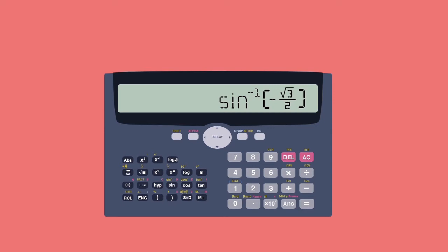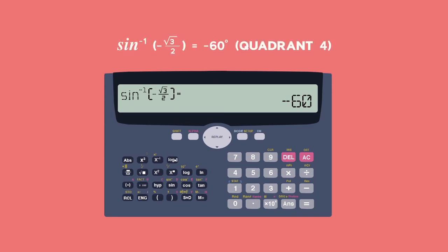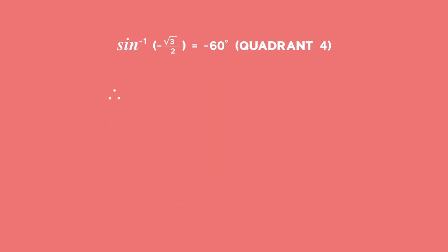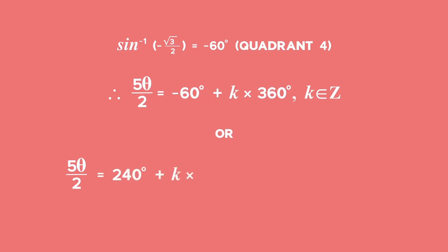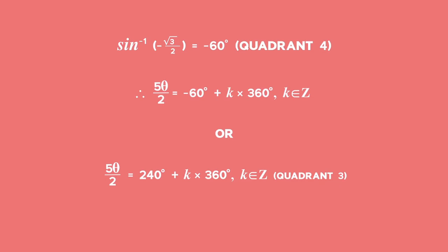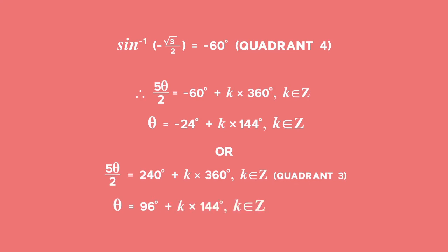When you press second function sine of negative square root 3 over 2 on your calculator, you get an angle of negative 60 degrees. The sine function is negative in the third and fourth quadrants. Therefore, using the general solution, we get: 5 theta over 2 equals negative 60 degrees plus k times 360 degrees, or 5 theta over 2 equals 240 degrees plus k times 360 degrees, where k is an integer. Dividing both sides by 5 over 2 (multiplying by 2 over 5), we get theta equals negative 24 degrees plus k times 144 degrees, or theta equals 96 degrees plus k times 144 degrees.